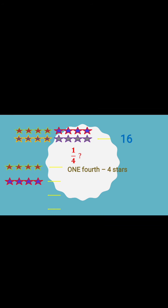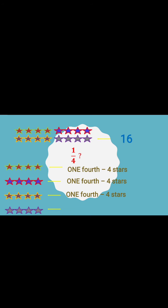Similarly, the blue stars — this one fourth is also one fourth, there are 4 stars. Purple stars — this one fourth is also one fourth, there are 4 stars. So we divide 16 into 4 equal parts, which means one fourth, and we take one part — that is called one fourth. There are 4 stars.